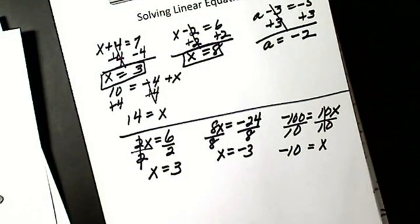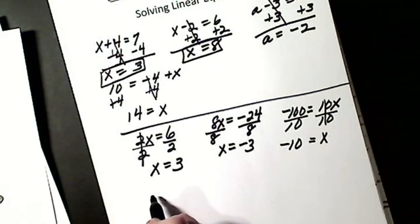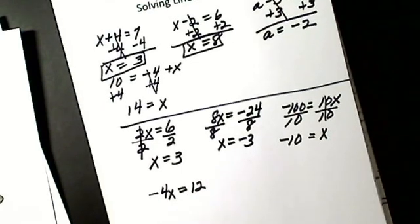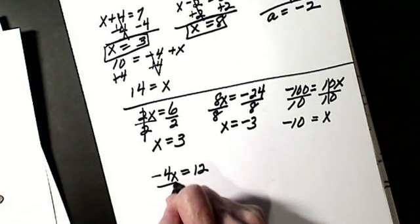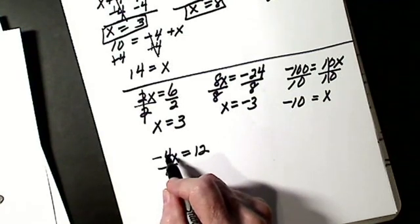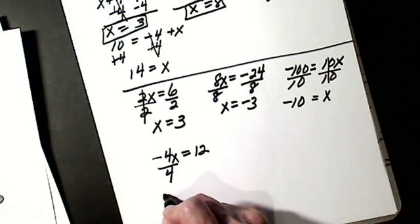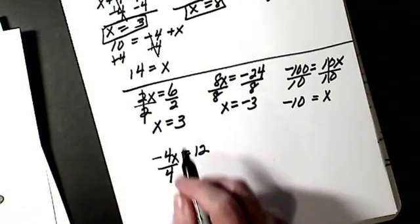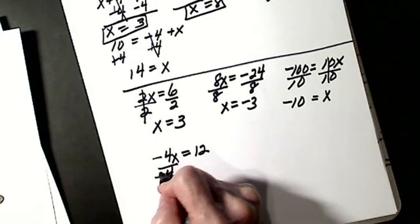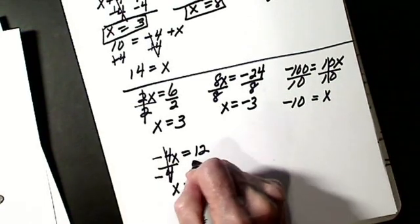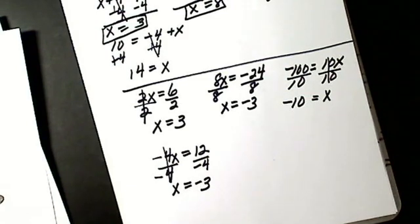The only thing that might be confusing is if I have a negative coefficient. Let's say I have negative 4x equals 12. I have to divide by 4 because that will give me x alone. But if I just divide by 4, in division, unlike signs gives me a negative — I'll end up with a negative x. When they say solve for x, they want to know what positive x is. So I would divide by negative 4 because that way like signs are plus and I end up with a positive x. What I do to one side, I do to the other side. So x is negative 3.